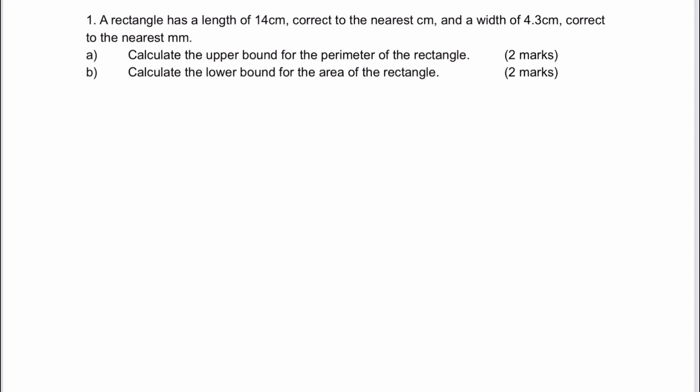of 14 centimeters. The important thing is it's correct to the nearest centimeter. So if we look at the bounds on that, what we're basically saying is that the smallest that this particular centimeter length can be is going to be 13.5, which we're calling the lower bound. Which means the upper bound is going to be 14.5.